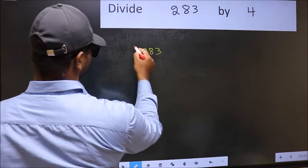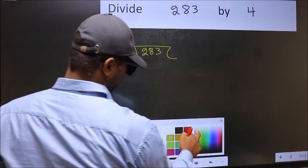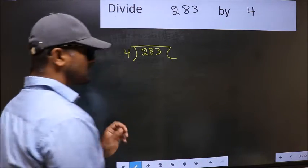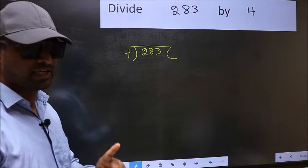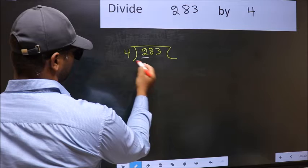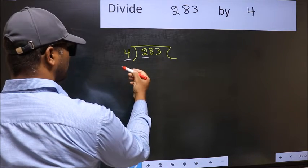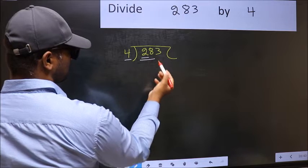283, 4 here. This is our step 1. Next, here we have 2 and here 4. 2 is smaller than 4, so we should take 2 numbers: 28.